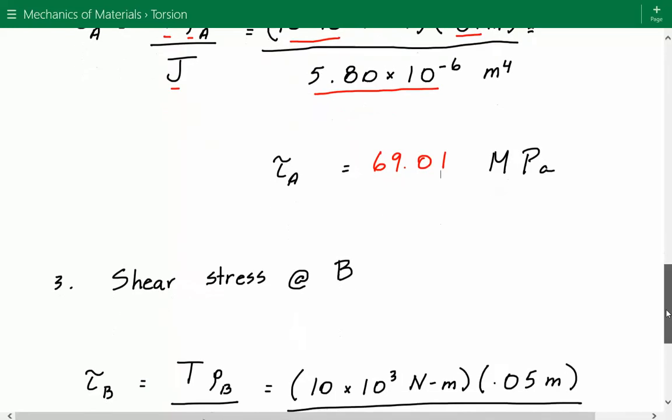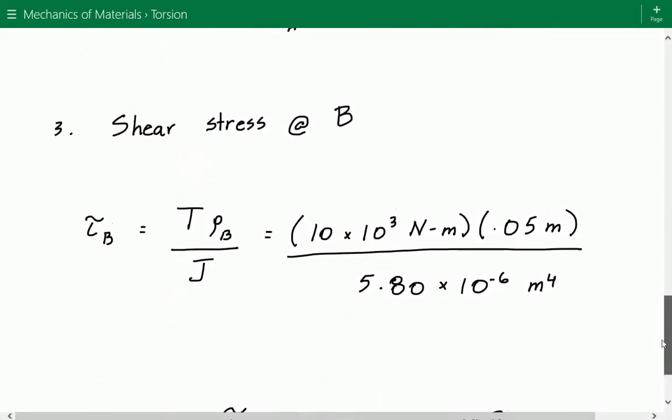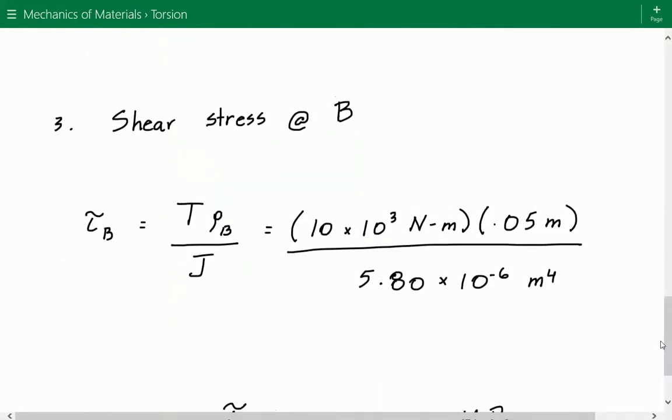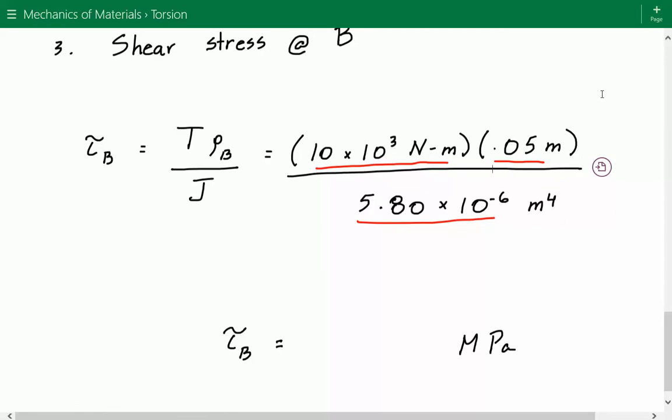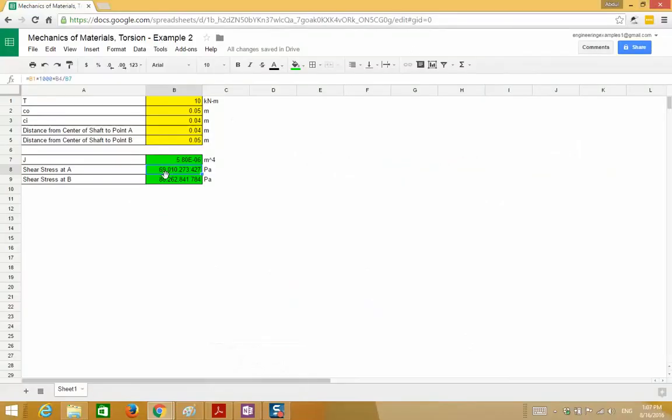The shear stress at location B uses the same formula and the terms are also the same. The torque is the same as the previous calculation, J is the same. The only difference is the radial distance from the center of the cross-section. Point B is at the outer radius edge, so that's 0.05 meters. The shear stress at location B is equal to about 86.26 megapascals.